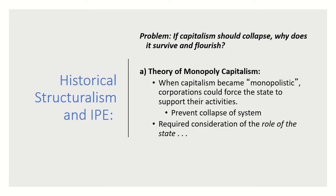Applying Marxist theory to international capitalism: if capitalism should collapse as Marx suggested through the falling rate of profit, why does it continue? In the theory of monopoly capitalism, when capitalism becomes monopolistic, corporations could force the state to support their activities, preventing the collapse of the system. If monopolistic capitalism controls a country's economic system, the state or government needs to be on board with capitalist programs. In other words, state and corporations work together because they provide mutual benefit.